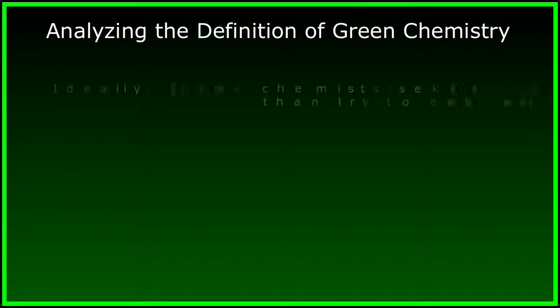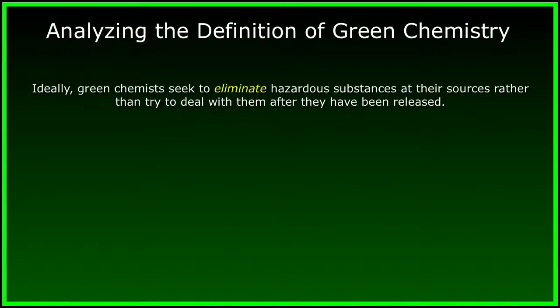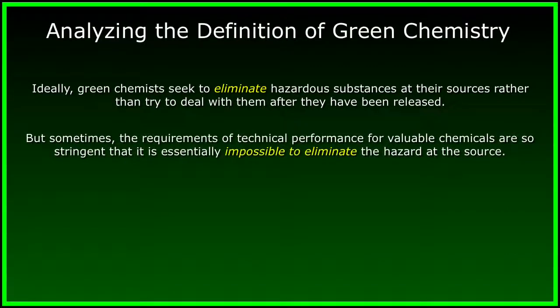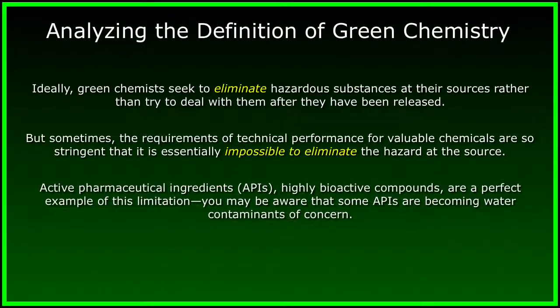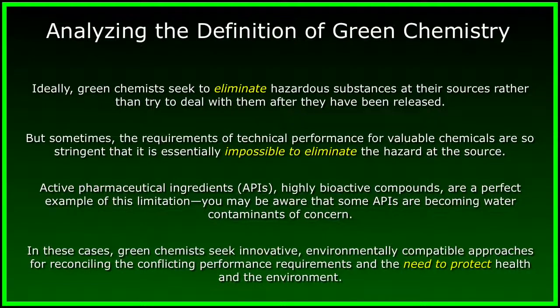Thinking further about the definition, ideally green chemists will seek to eliminate hazardous substances at their sources, rather than try to deal with them after they've been released. But sometimes the requirements of technical performance for valuable chemicals are so stringent that it is essentially impossible to eliminate the hazard at the source. Active pharmaceutical ingredients and drugs — highly bioactive compounds — are perfect examples of this limitation. Some APIs are becoming water contaminants of concern. In these cases, green chemists will seek innovative, environmentally compatible approaches for reconciling the conflicting performance requirements and the need to protect health in the environment.